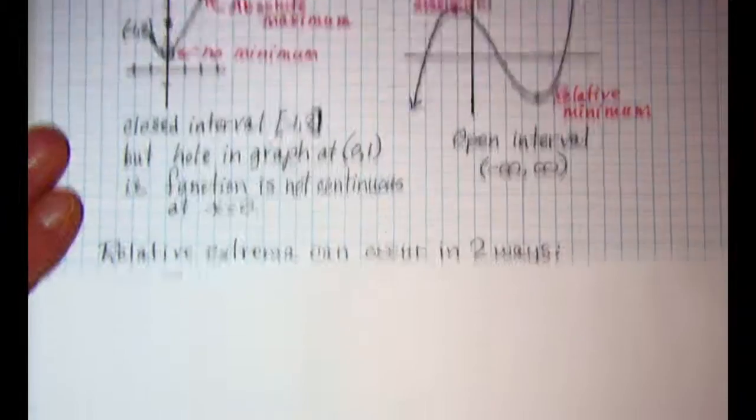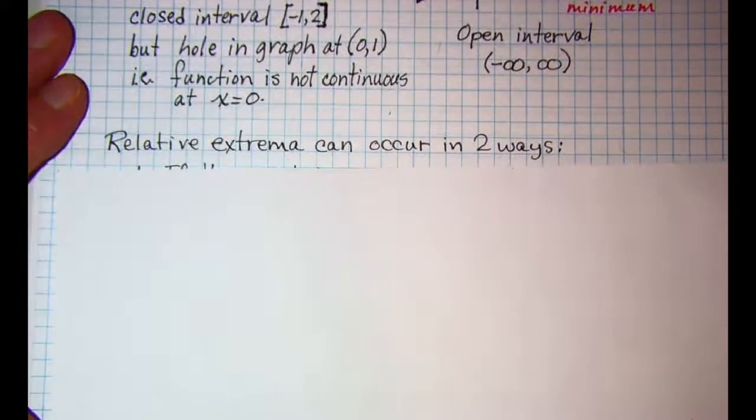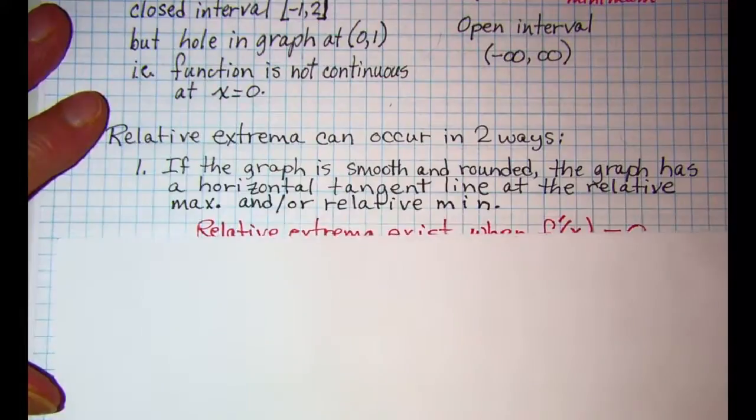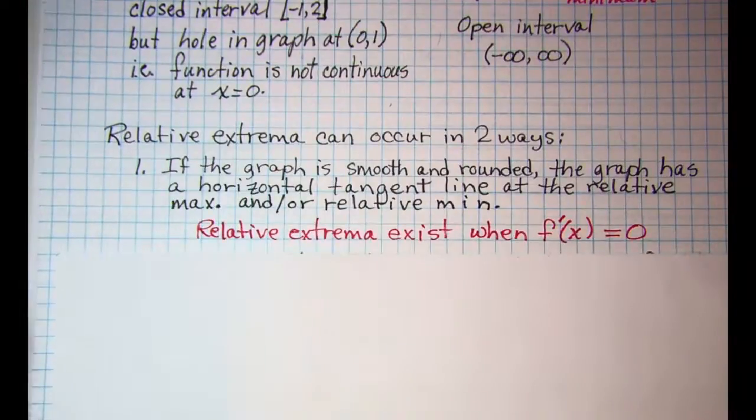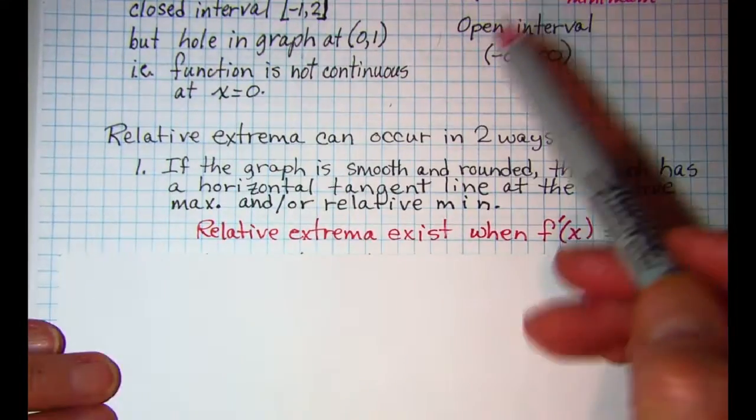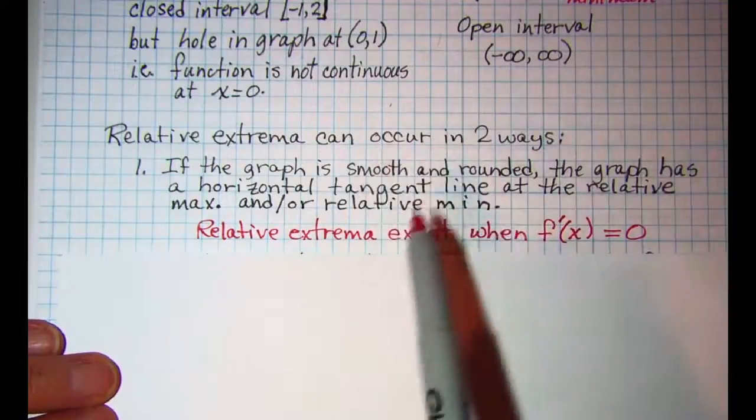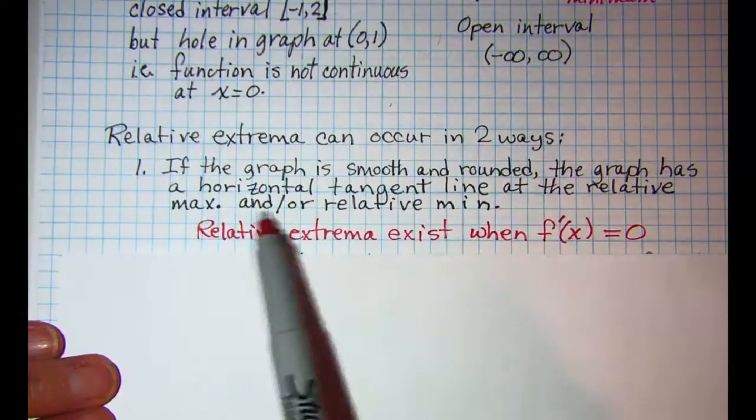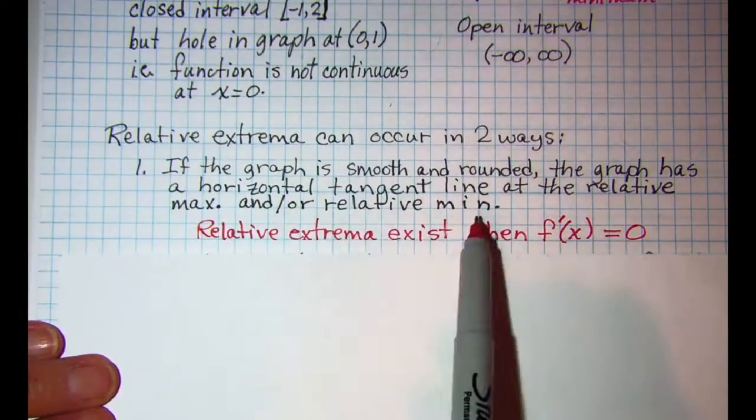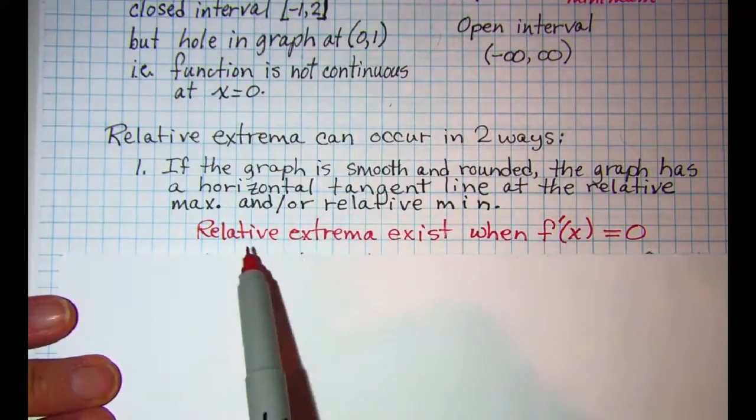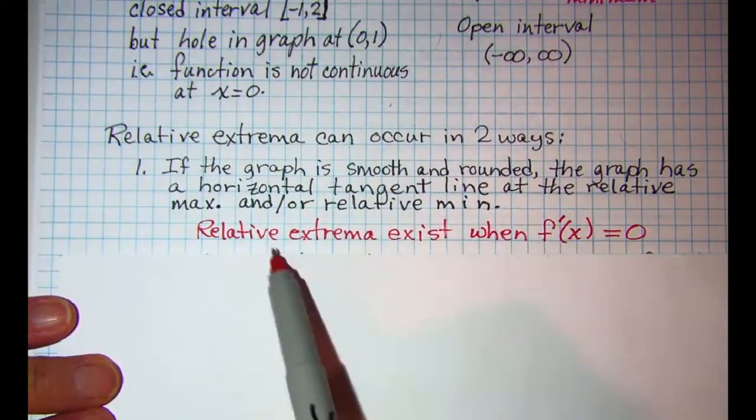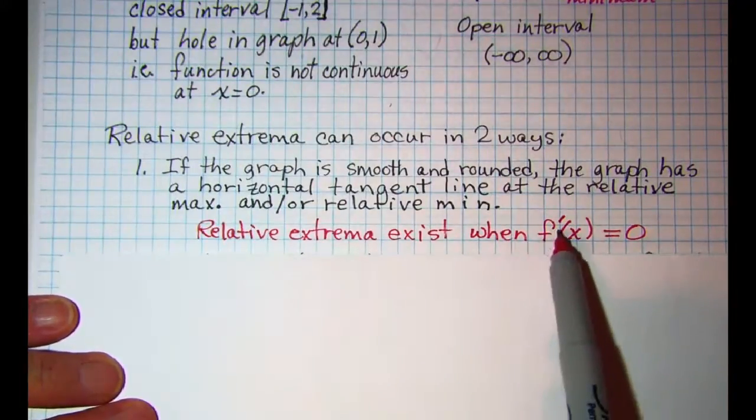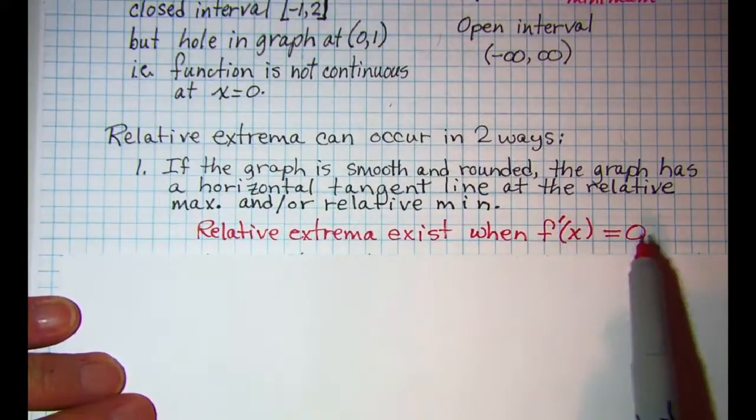Now when we talk about relative extrema they can occur in two ways. If the graph is smooth and rounded like the example we just did, then the graph has a horizontal tangent line at the relative max and/or the relative min. In other words, you can find your relative extrema when the derivative is equal to zero.